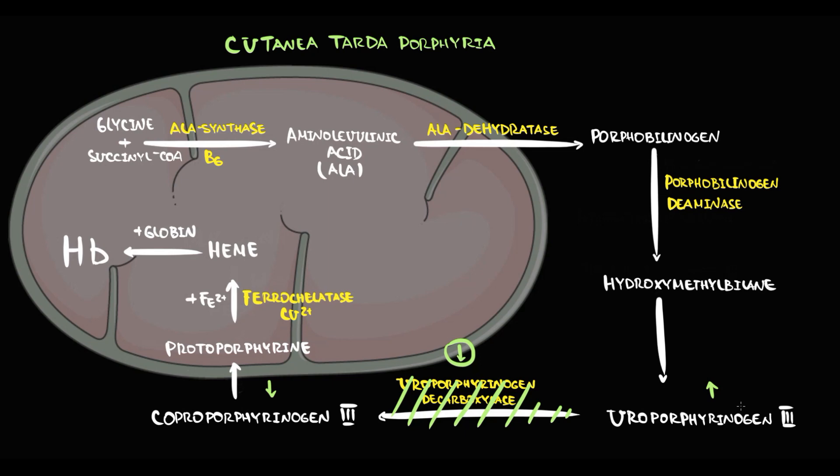Initially, uroporphyrinogens will be progressively accumulating inside the erythroblast. But then, with destruction of erythroblast, they will be released into the plasma. The problem is that porphyrins are highly reactive substances. And while they are in the plasma, light exposure can give them energy.